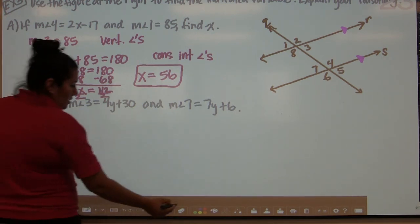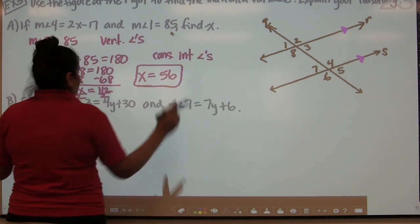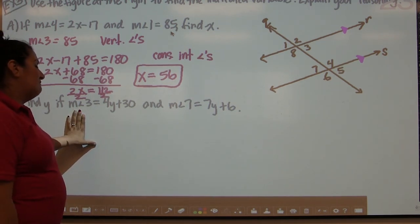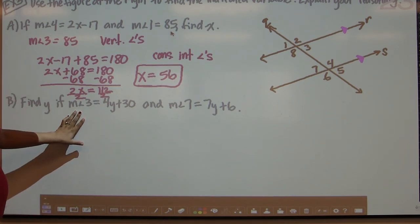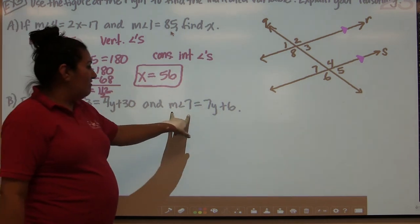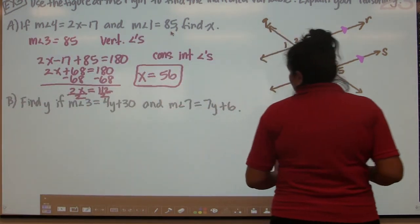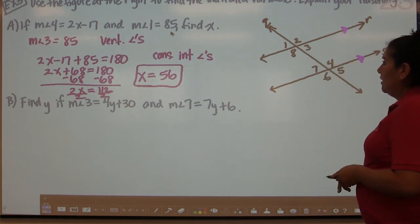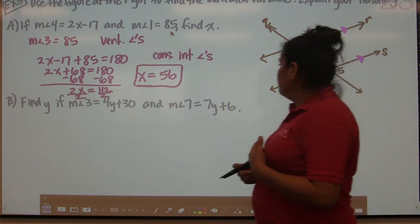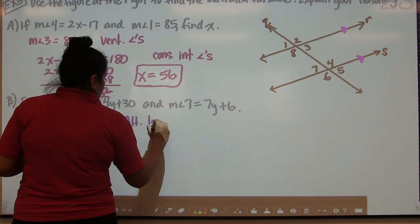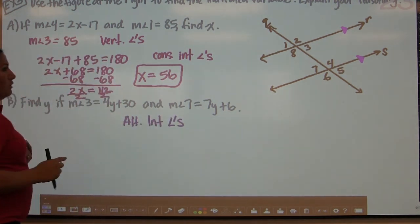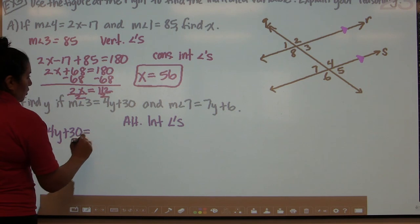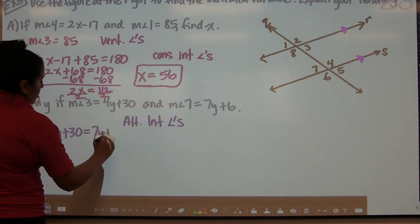Now part B: find y if the measurement of angle 3 equals 4y plus 30 and the measurement of angle 7 equals 7y plus 6. First, locate angle 3 and angle 7 in the diagram. Angle 3 is here, angle 7 is there. It's clear that they are alternate interior angles. By the alternate interior angles theorem, those two angles should be congruent. So 4y plus 30 should equal 7y plus 6.